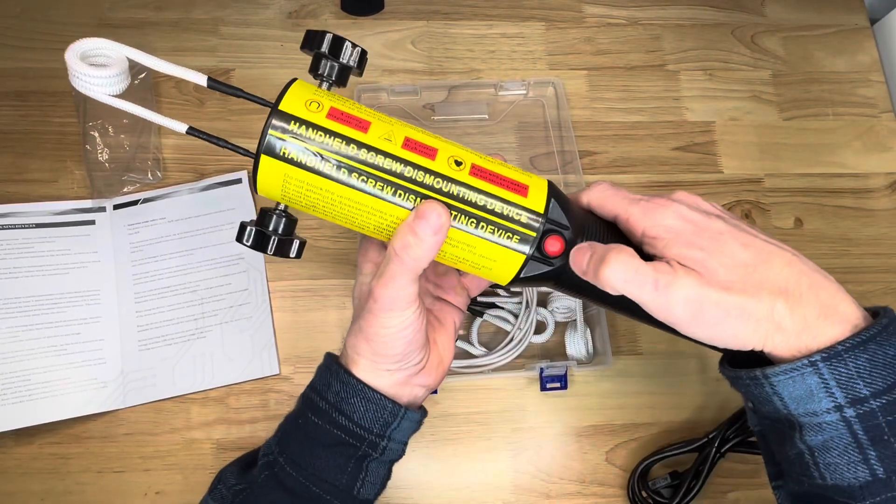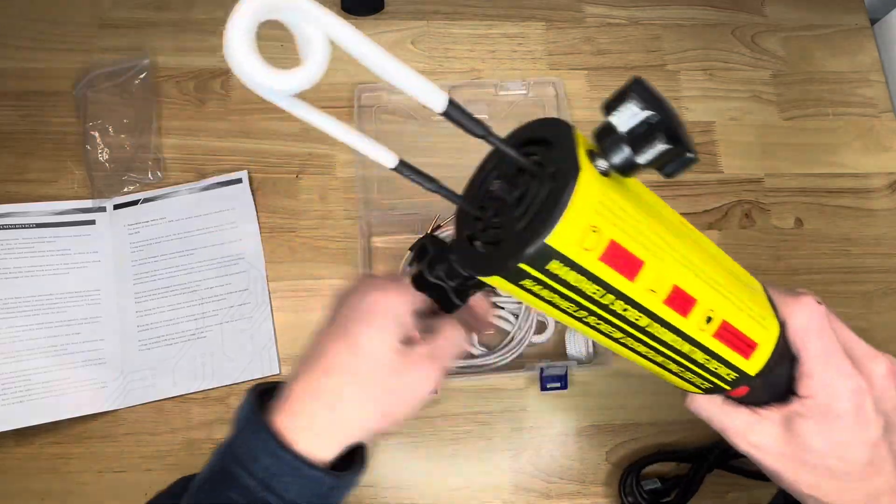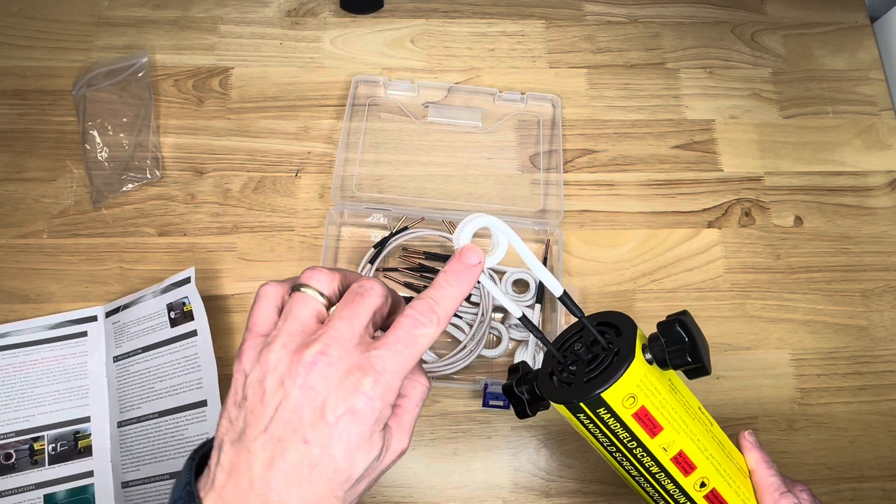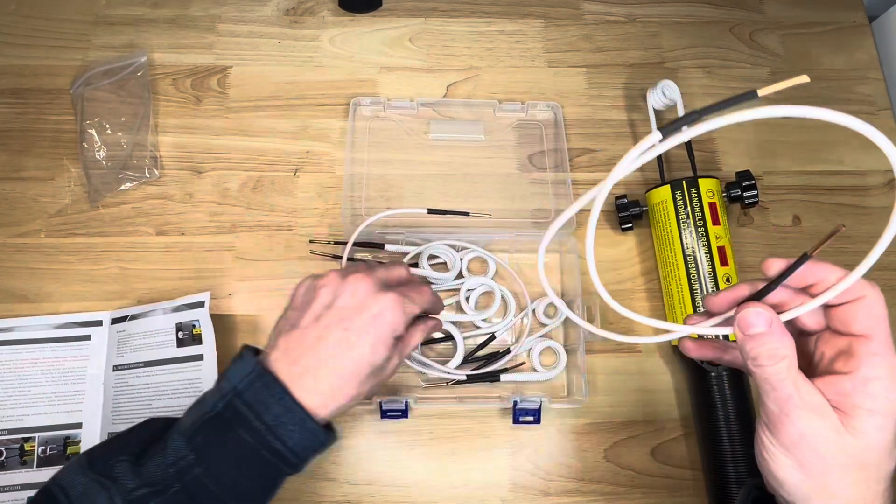Now we can plug it in, and to start it we just push that button right there. You want to select the size coil that's going to be appropriate for the size fastener you're trying to loosen.